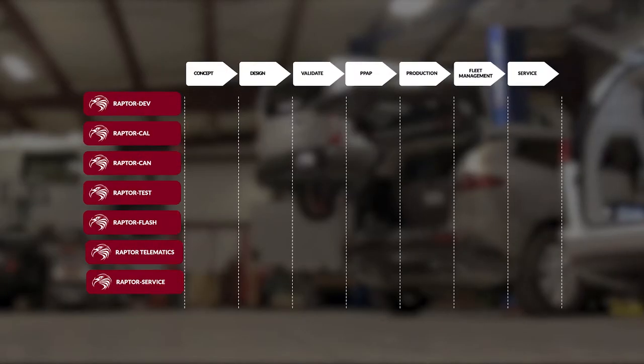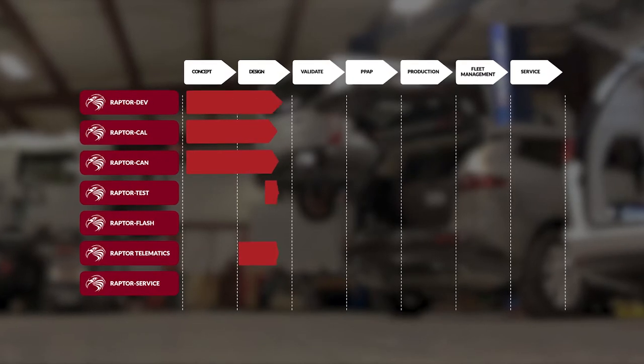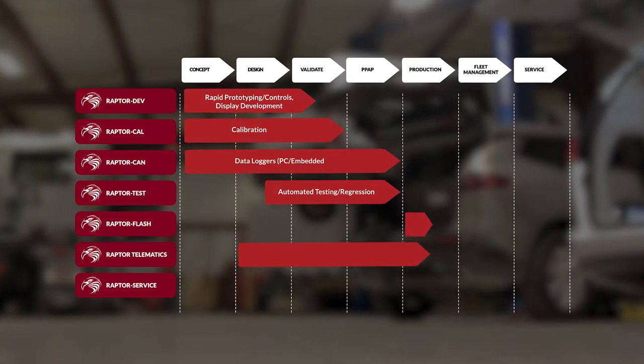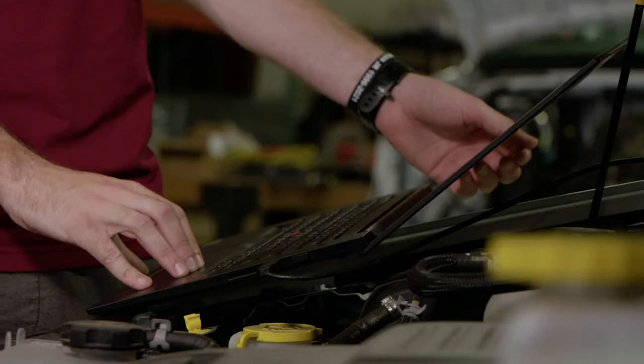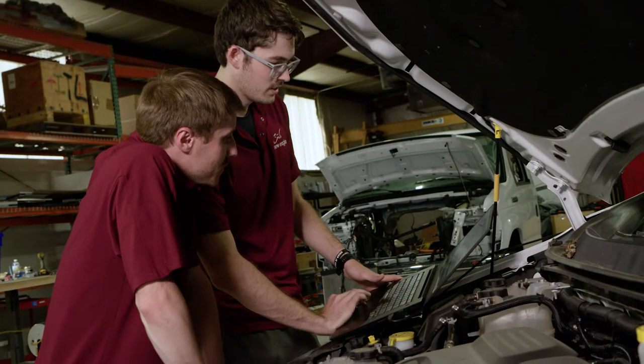With Raptor's embedded model-based design software, you can code faster, test faster, and service your vehicles in the field faster, all while keeping control of your IP. You can change code in minutes rather than waiting a week or more to get a new version from your vendor.